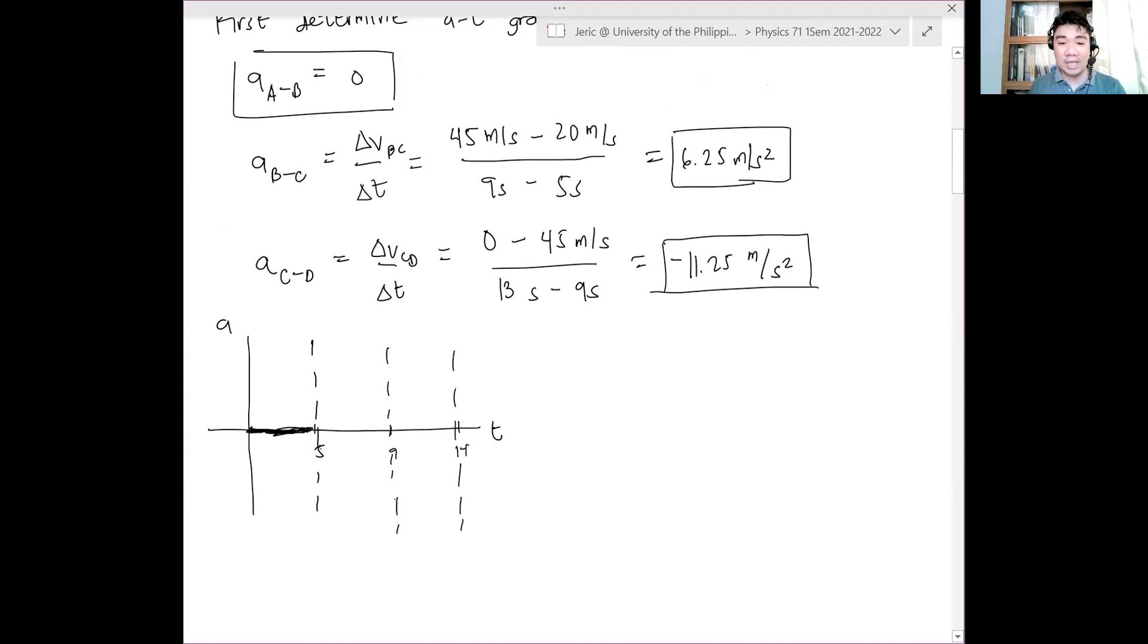So from t equals 0 to t equals 5, the acceleration is zero. So the graph should be on the t-axis. What about from t equals 5 to t equals 9 seconds? It's constant positive at 6.25 on the positive a-axis. And from 9 to 13? Negative a at minus 11.25. So there's your acceleration-time graph.